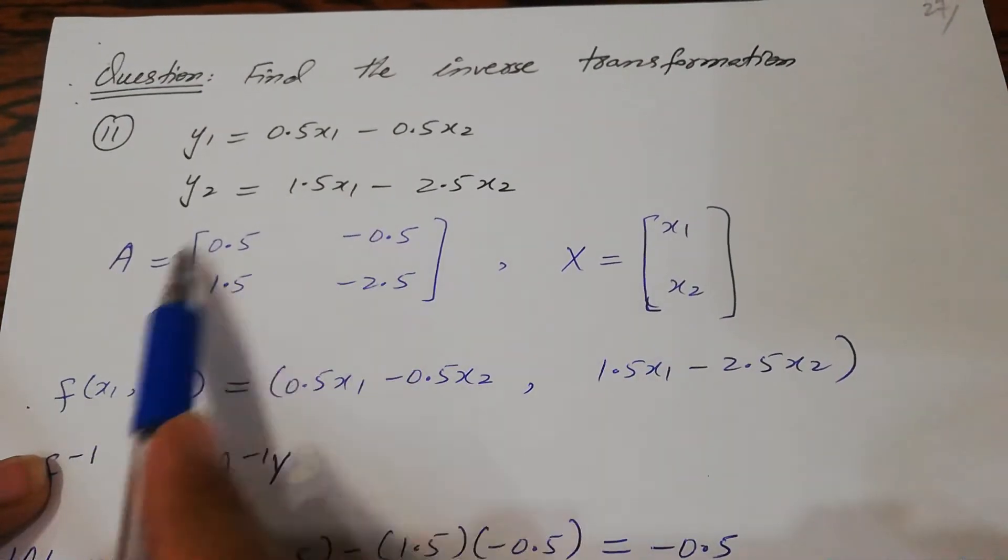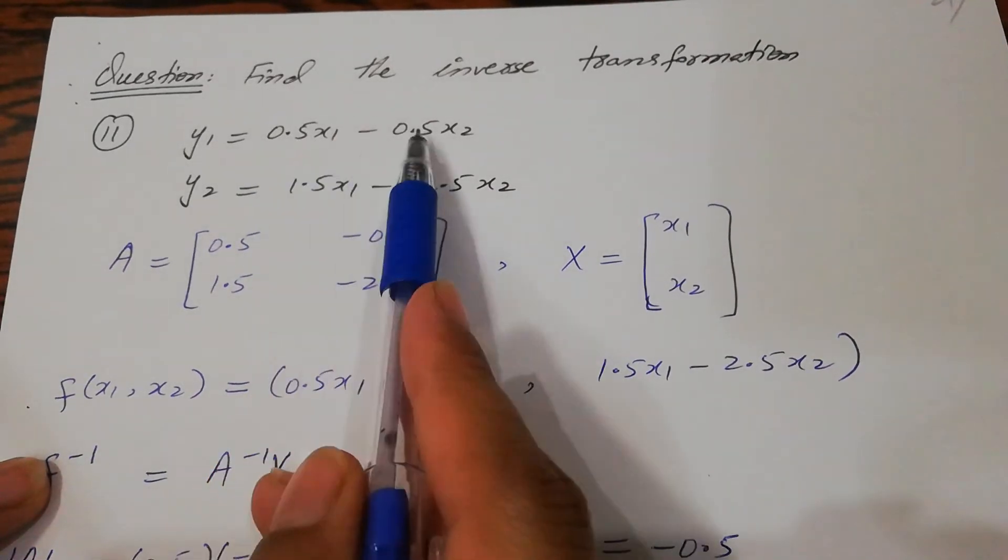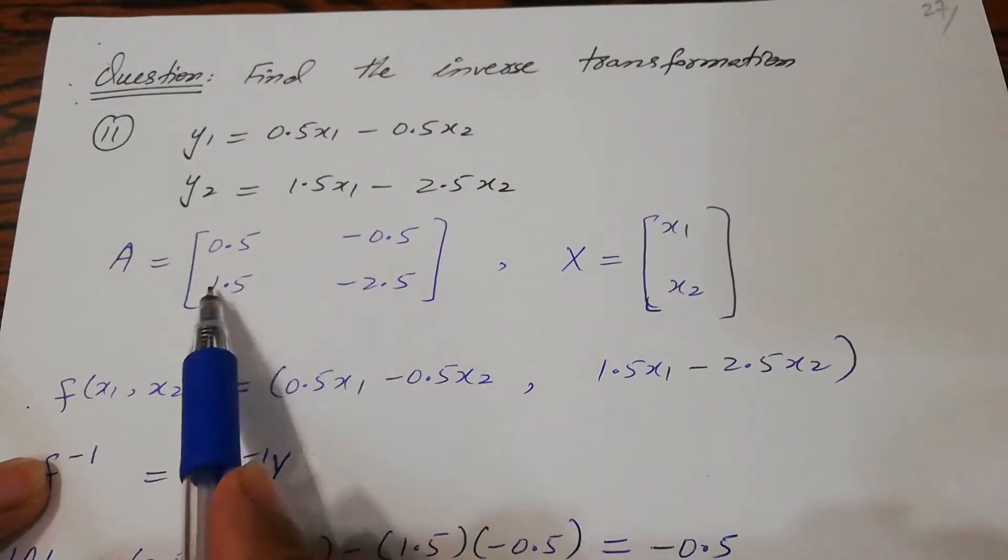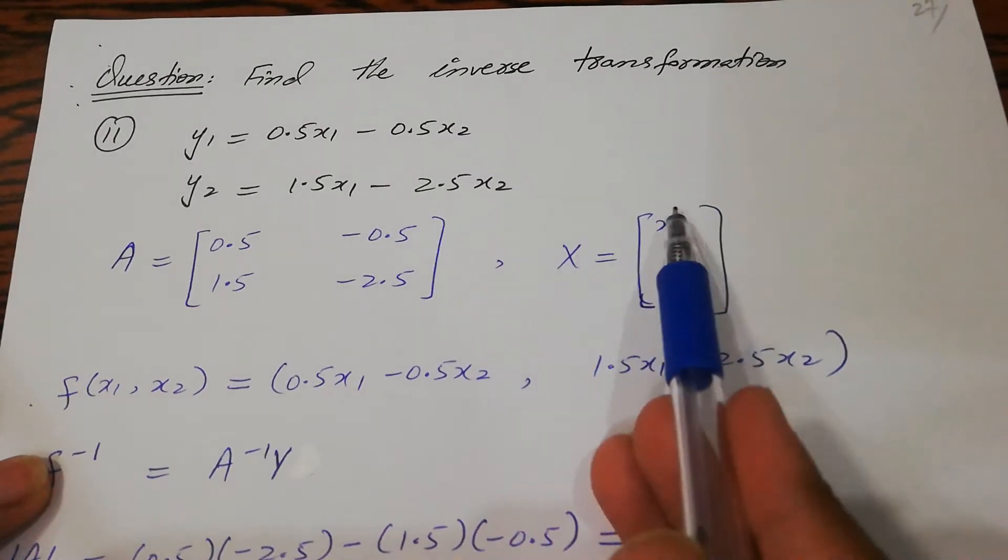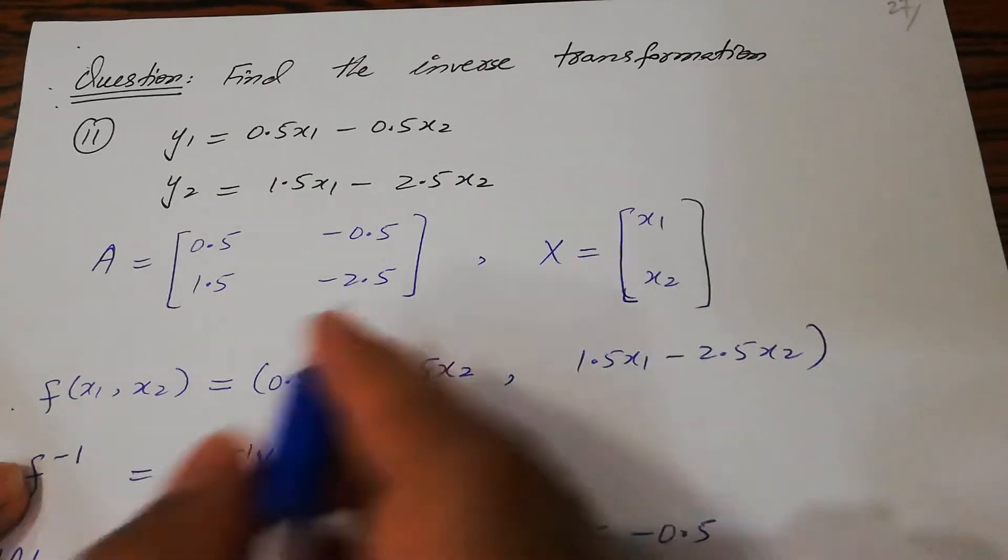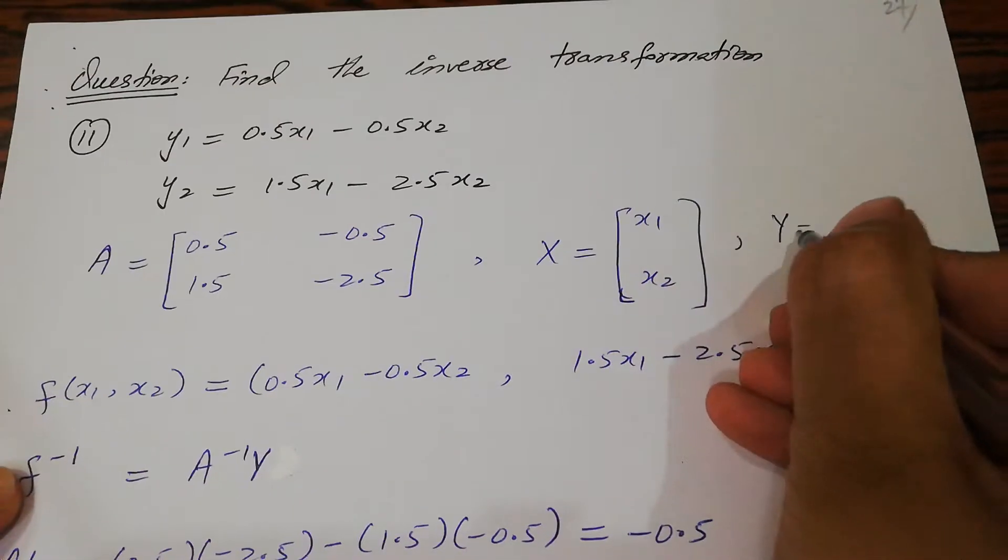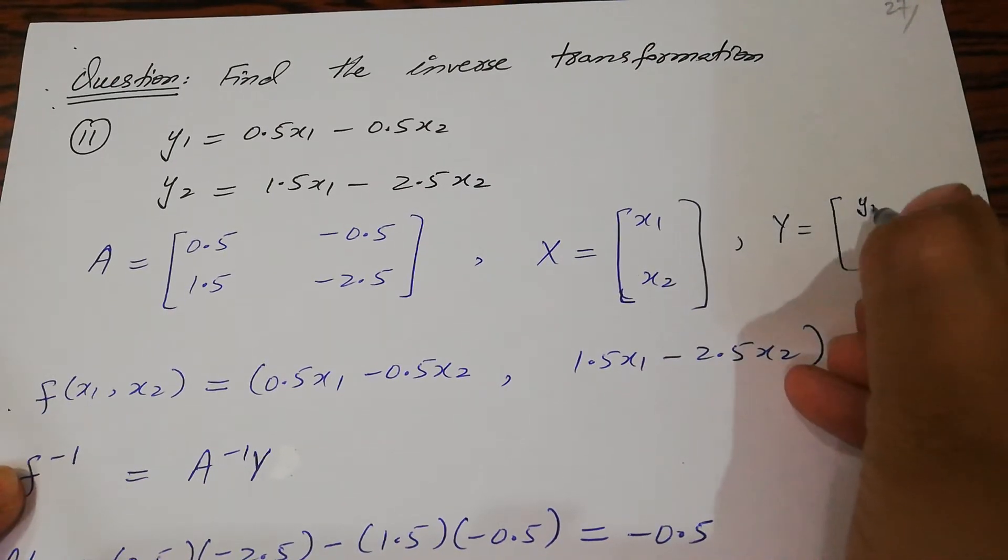You can write the A matrix as [0.5, -0.5; 1.5, -2.5], the X matrix as [x1; x2], and the Y matrix as [y1; y2].